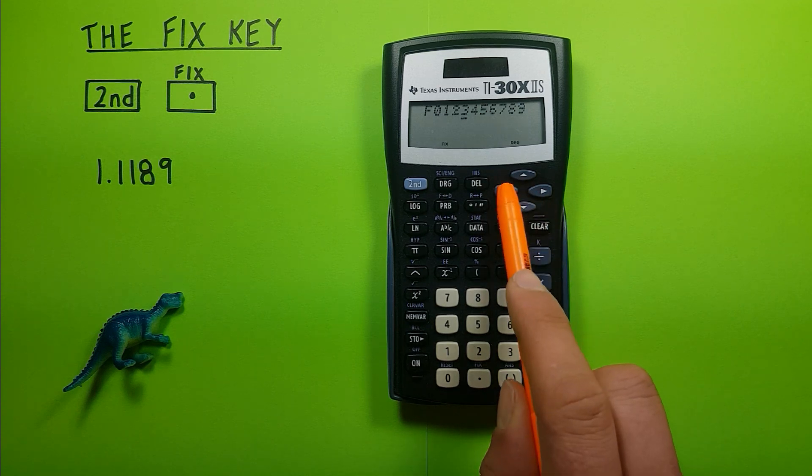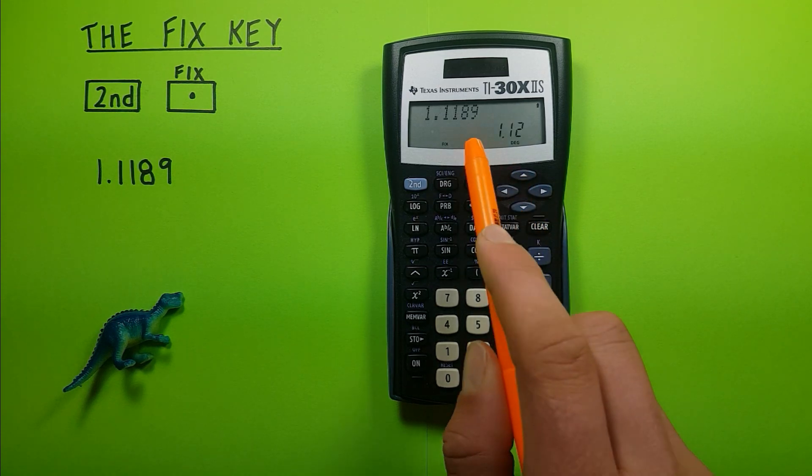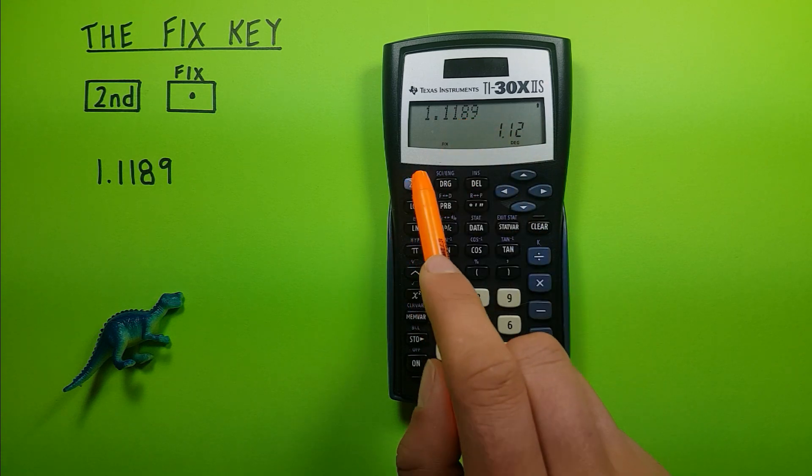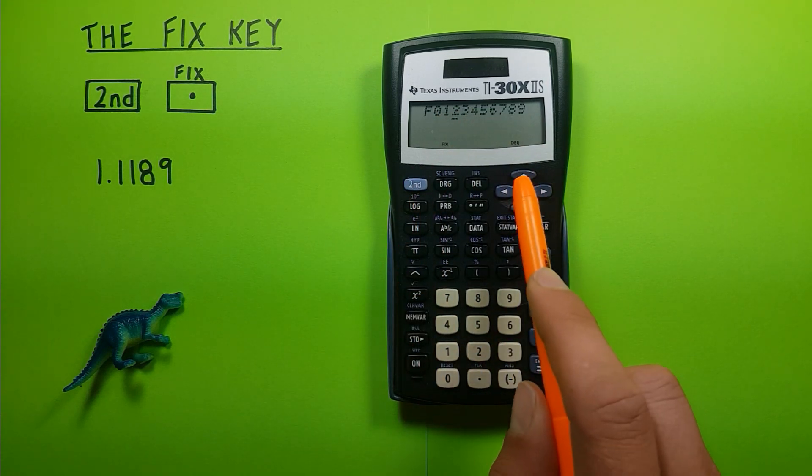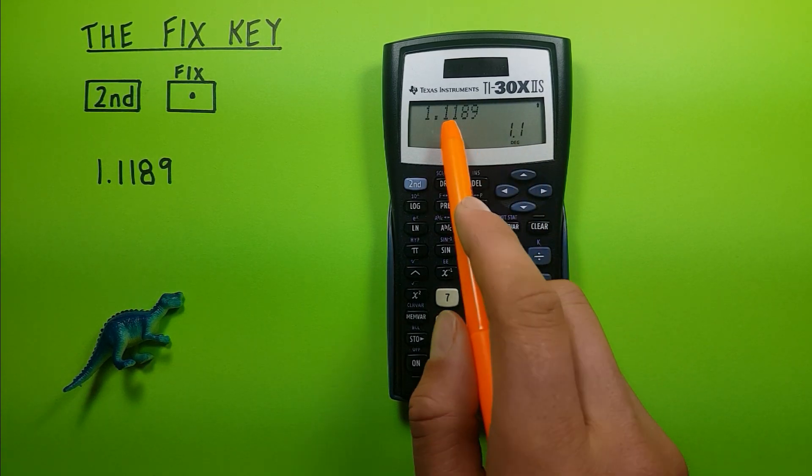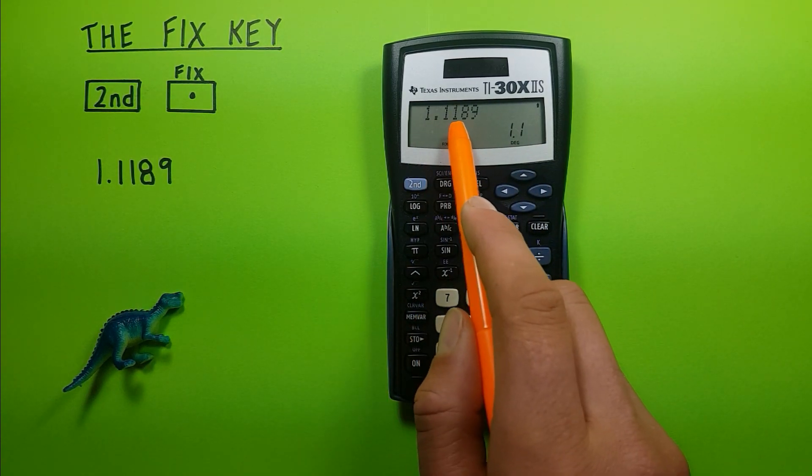We can try it to two decimal places. There you see that 1 has been rounded up to a 2 because of that 8. And if we try it to one decimal place, you see it stays as a 1 because that 1 would not round up.